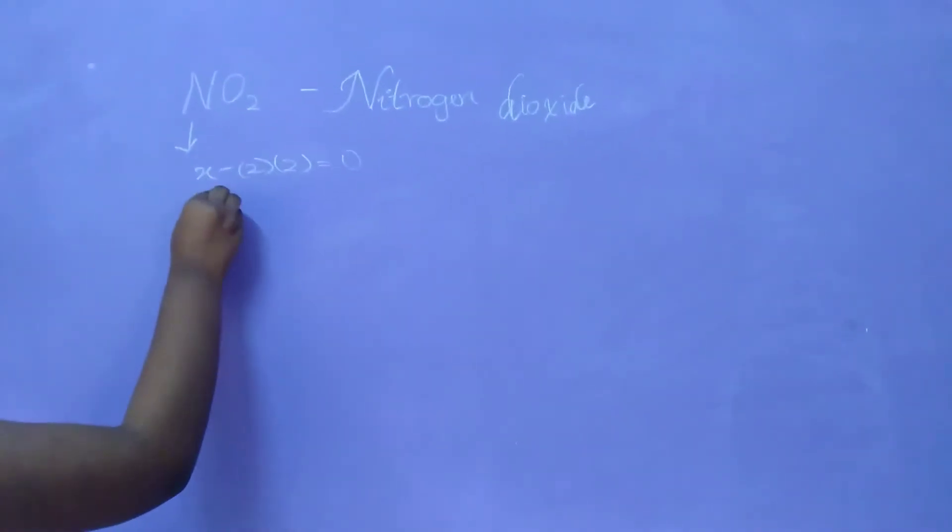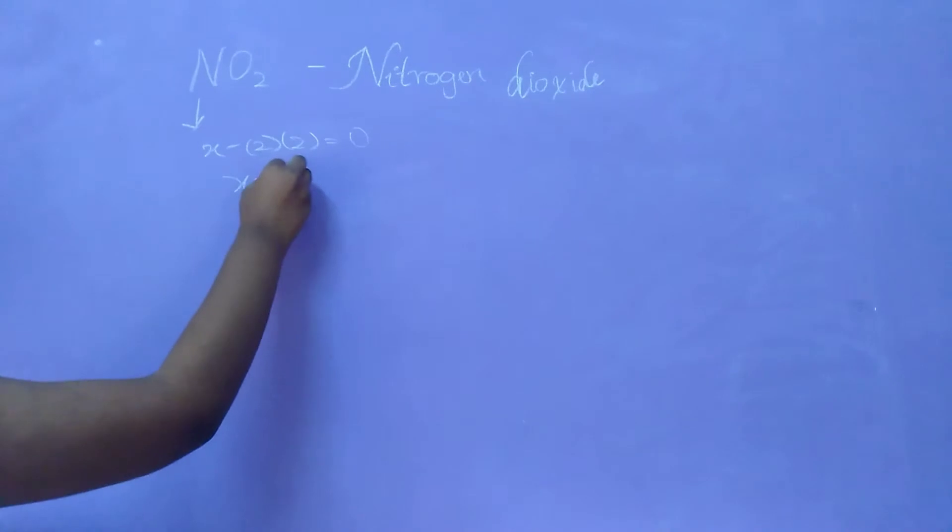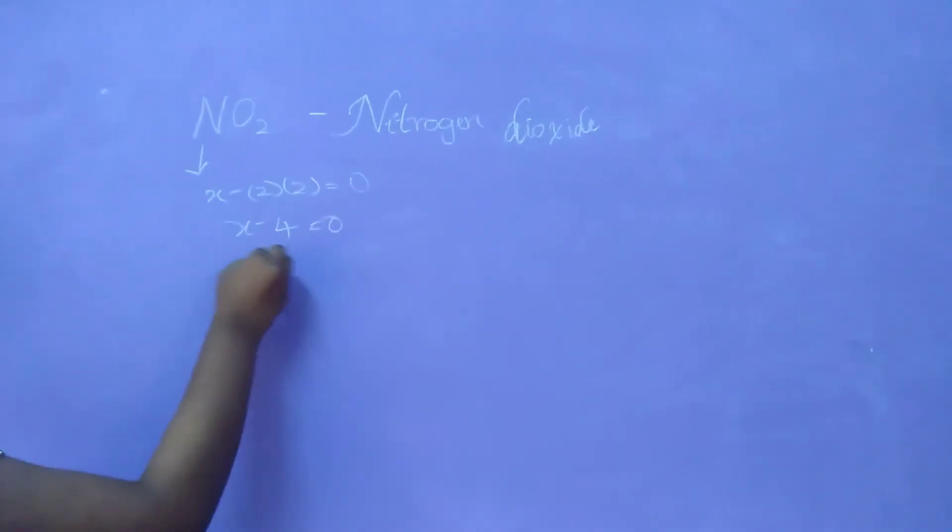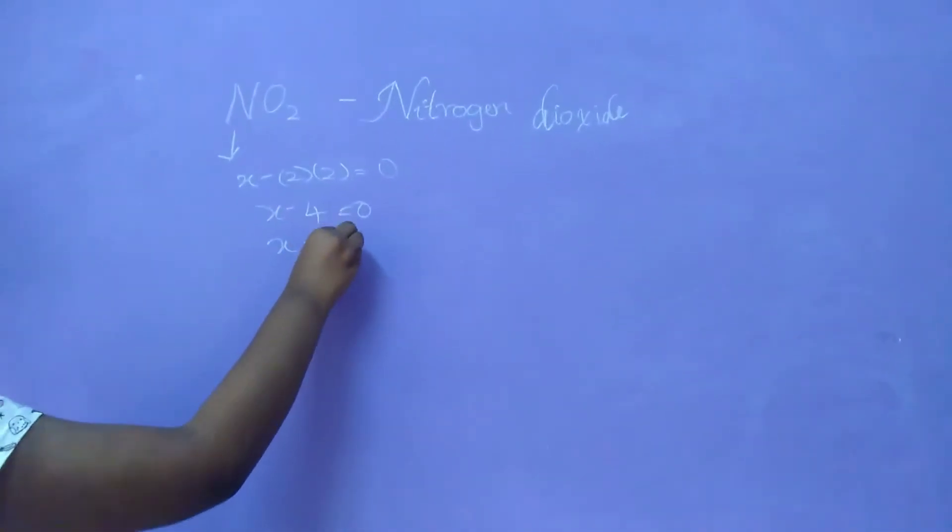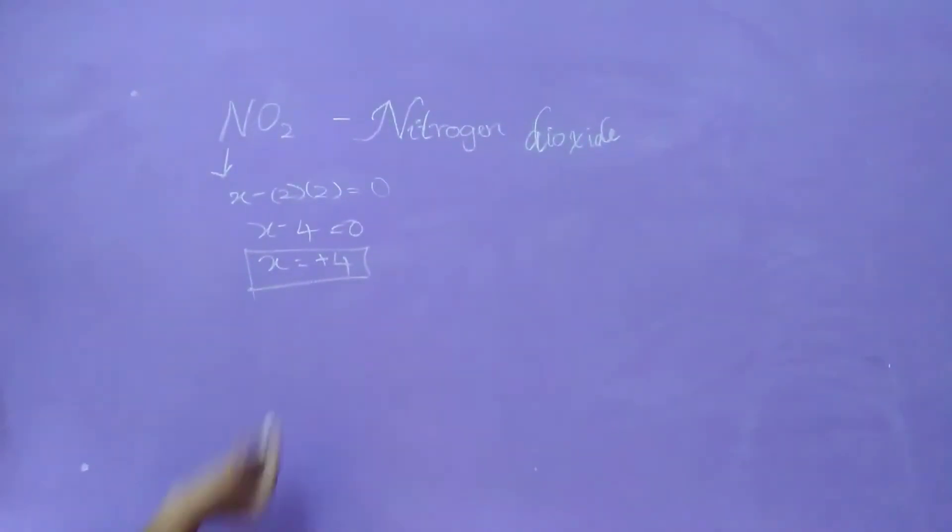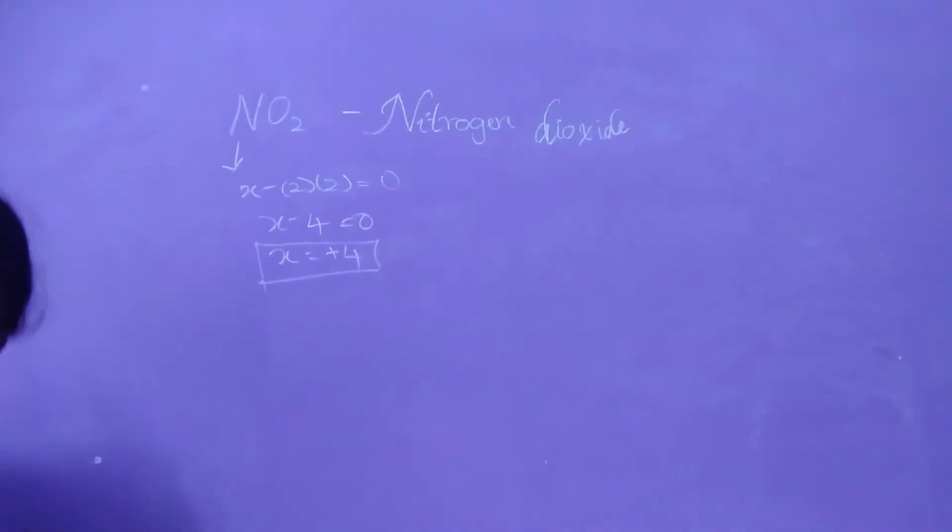So X minus 2 into 2 will be 4, equals 0. X will equal plus 4. This is the oxidation number of nitrogen using the calculation method. Now let us verify this with the structural method.